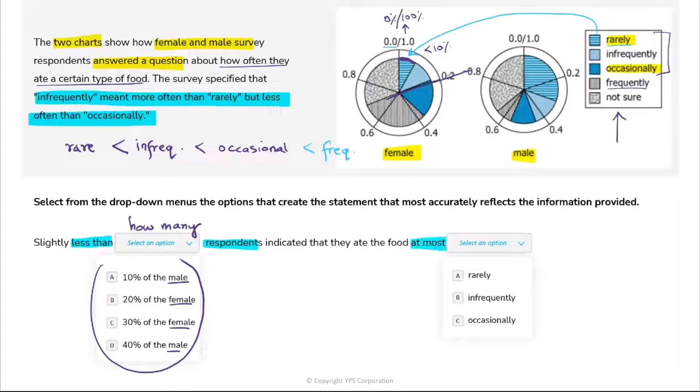So what do I want? Let's read further. Slightly less than how many respondents indicated that they ate the food at most dash - so at most rarely, at most infrequent, and occasional. We have till now seen at most with numbers. When I say at most two, it means two or less, right? Two, one, zero, and so on. But how about putting it with a word? At most rare, at most infrequent? This is where this order that we got in the question is very important. When I say at most rarely, this actually only means rarely because there is nothing which is rarely or less than that - that is the least category of all.